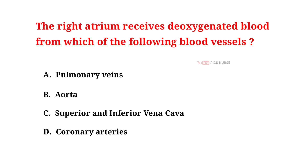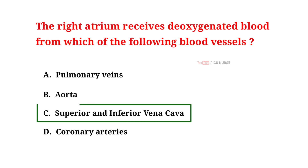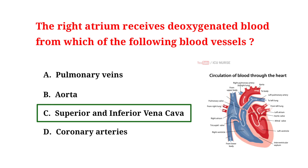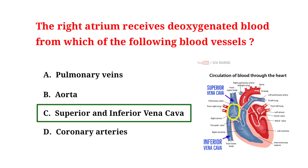And the correct answer is C. Superior and inferior vena cava. The right atrium receives deoxygenated blood from the superior vena cava and the inferior vena cava. The superior vena cava brings blood from the upper parts of the body, like the head and arms. The inferior vena cava brings blood from the lower parts of the body, such as the legs and abdomen.